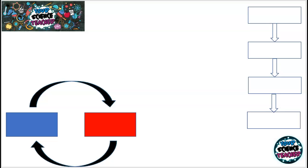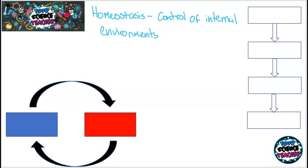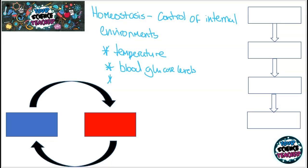The topic of the nervous system falls in a subcategory of the whole topic of homeostasis. To start this video off, we're going to look at what homeostasis is and why it's important in a nutshell. Homeostasis is the control of the internal environment. So what actually needs to be controlled in our body in order to stay safe? Well, things that we need to control are our temperature, blood glucose levels, and the water content in our body.